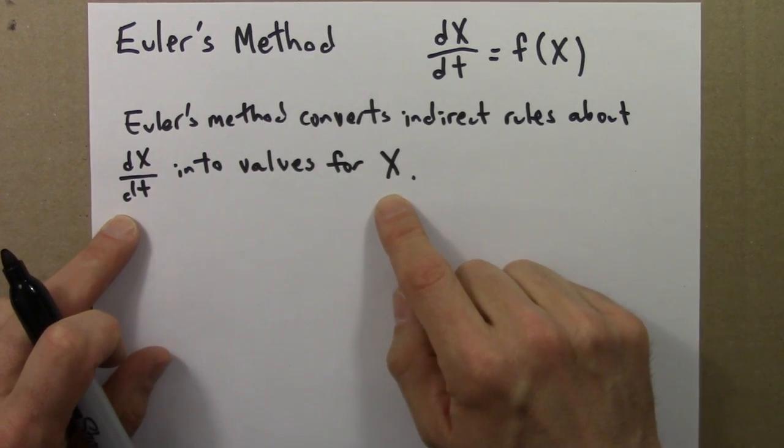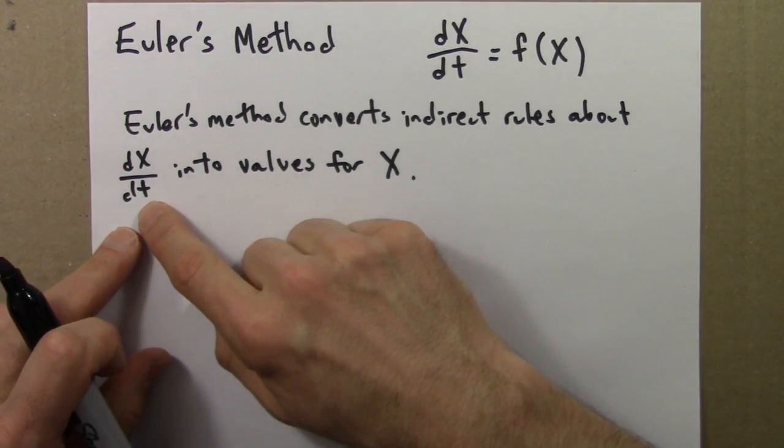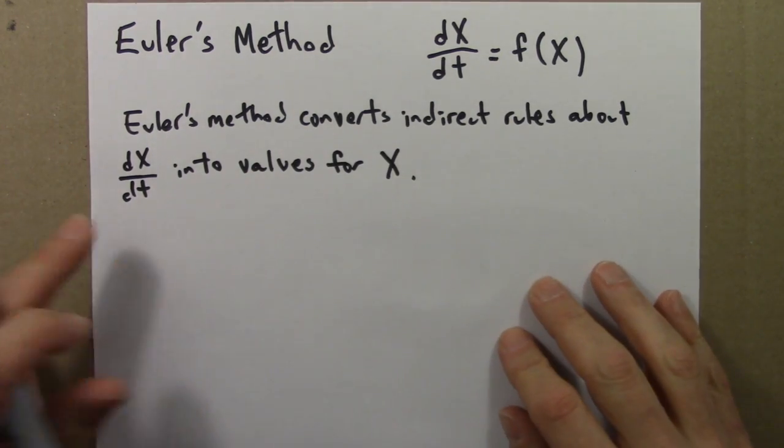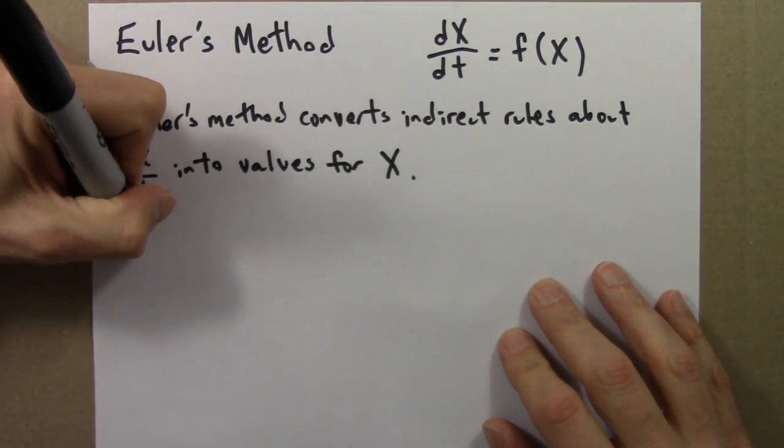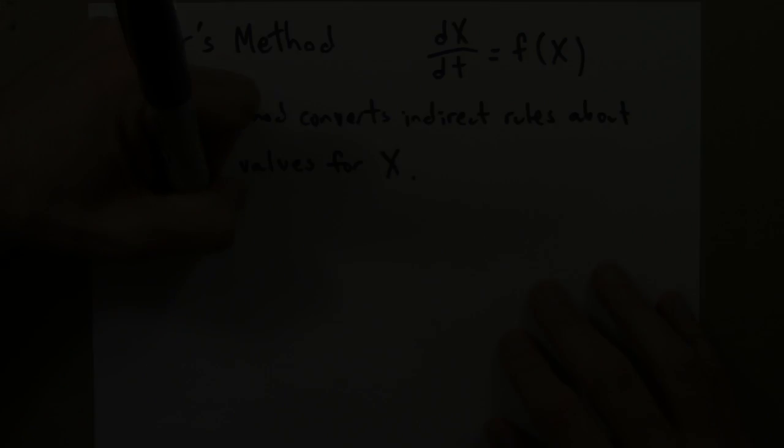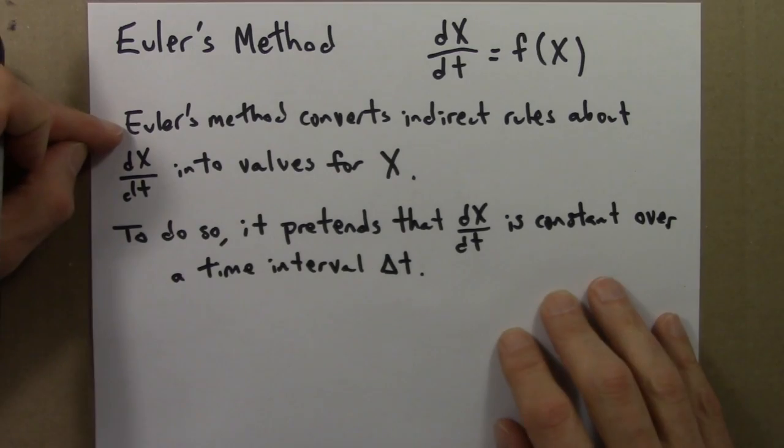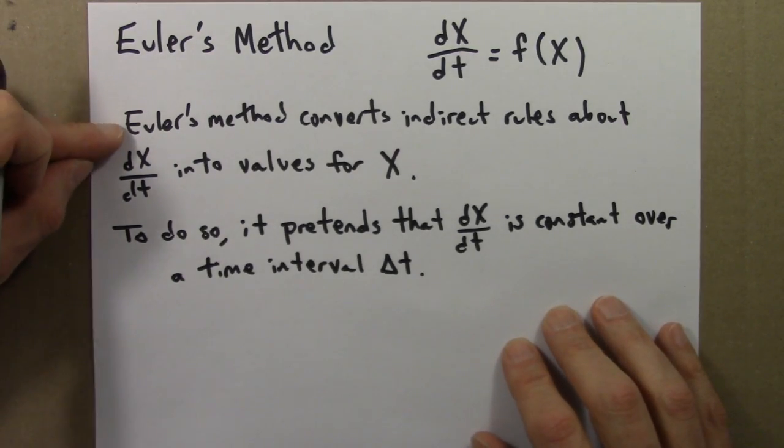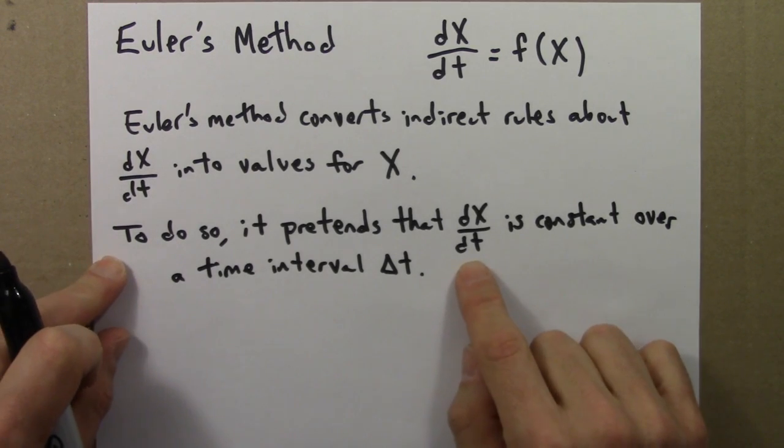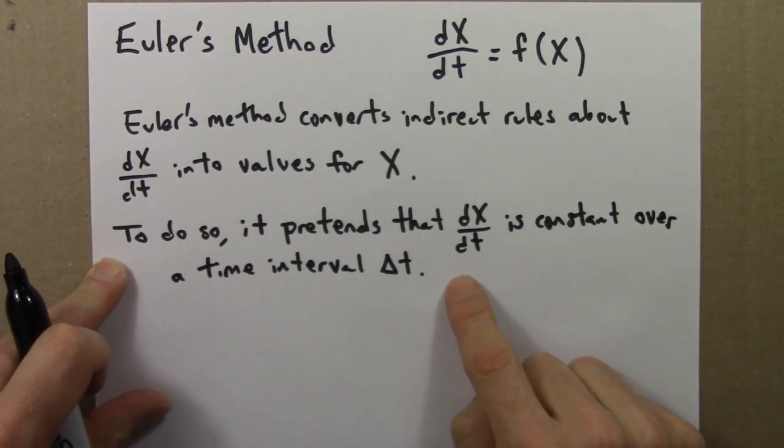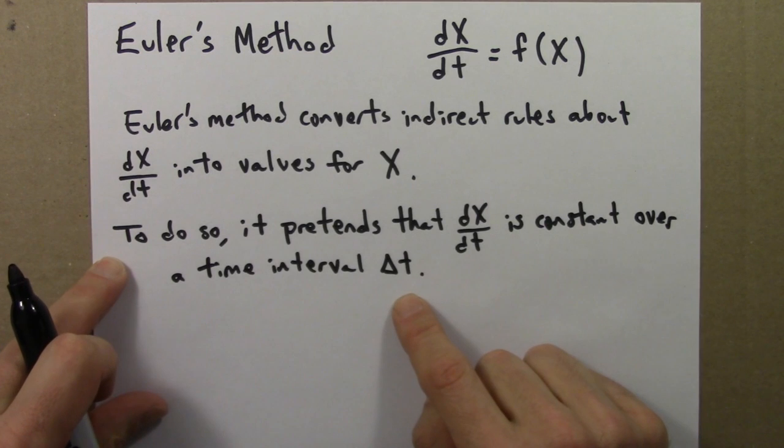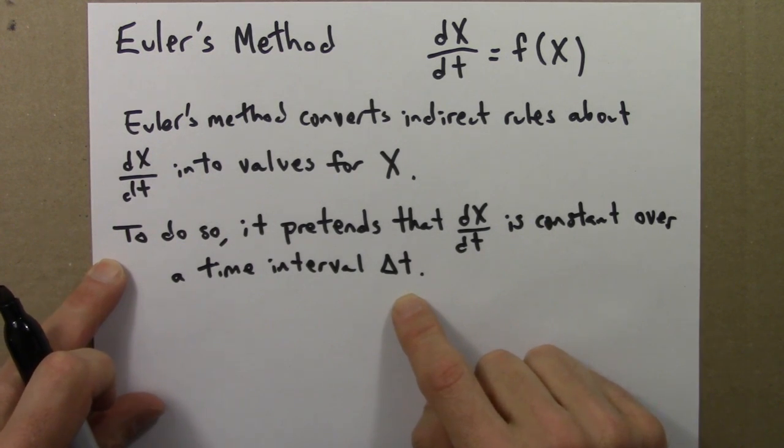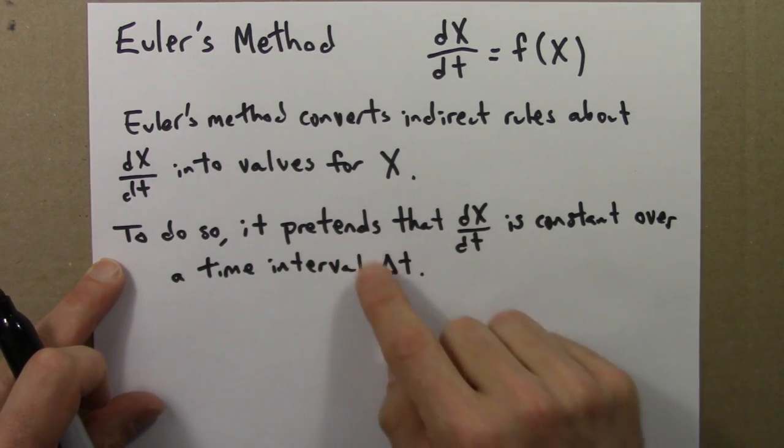It does so by pretending that this rate of change is constant over a time interval. So Euler's method does this conversion by pretending that the derivative, which is constantly changing, is actually constant over some time interval delta t. This bit of make-believe gets better, closer to the true value, as delta t gets smaller.